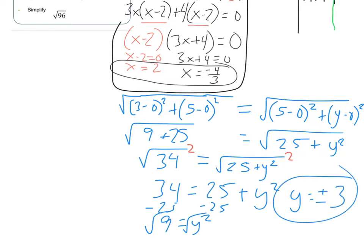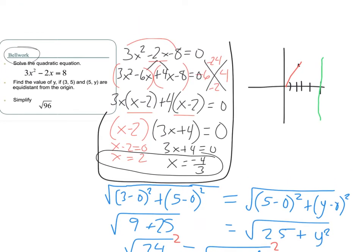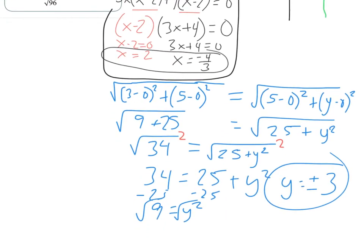So I can subtract 25, and that gives me 9 equals y squared. And if I square root that to solve for y, I'm going to get y equals plus or minus 3. Those would be the two coordinates that would work. I could have it in two different locations. I could have 5 comma 3 and 5 comma negative 3. This distance here would be equal to this distance. And I could also have that point down here because this distance here would be the same distance as well.